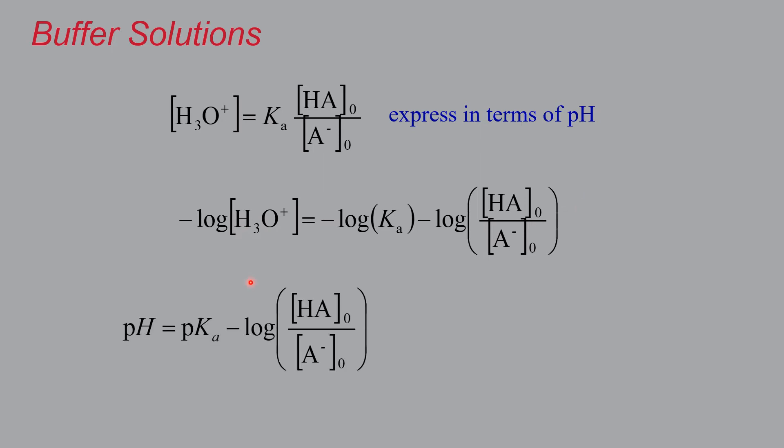And to simplify this, this often looks like this. So this factor here, this negative base 10 log of the Ka is called pKa and minus the base 10 log of the ratio of the acid and its conjugate base. And because for some reason people don't like this negative sign here...